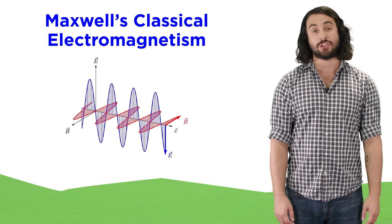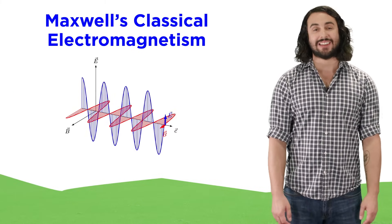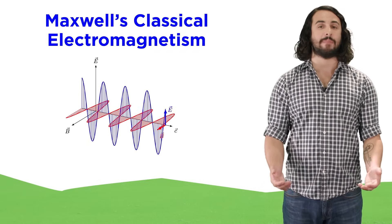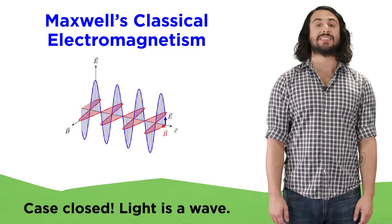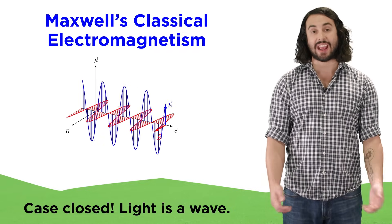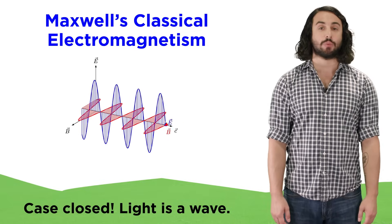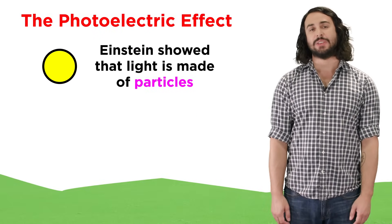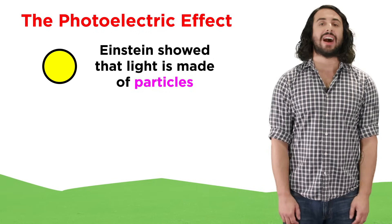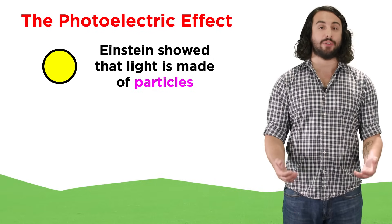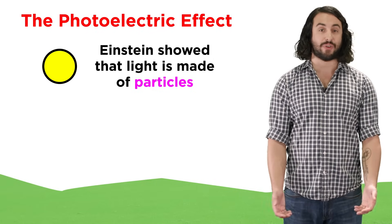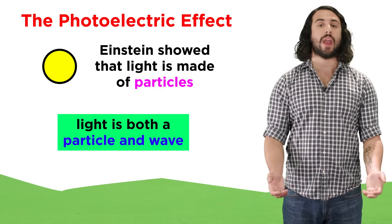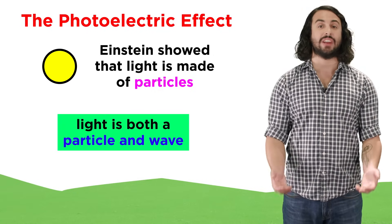Later in the century, Maxwell showed that light is a wave of oscillating electric and magnetic fields, so it seemed as though the case was closed on the declaration of light as waves. But in 1905, Einstein solved the problem of the photoelectric effect by assigning particle nature to light. Thus wave-particle duality was born.